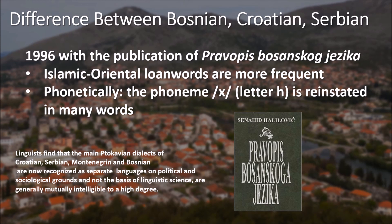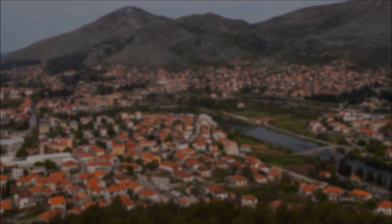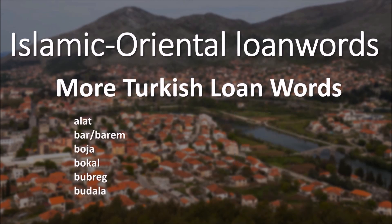Bosnian is different from Serbian and Croatian in its usage of the letter H — in Bosnian, the letter H is always pronounced. Another key differentiator is the influence of Turkish and Turkish loanwords. Let's hear some examples of Turkish words in Bosnian.